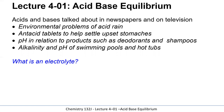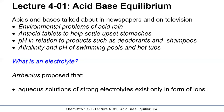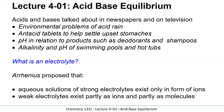So exactly what are acids and bases? To explain that, we're first going to talk about electrolytes. Electrolytes are substances that when dissolved in water will conduct electricity. Arrhenius suggested that strong electrolytes are substances that exist only in the form of ions — the molecules or ionic compounds will break apart and release ions into solution. Weak electrolytes only exist partly as ions and mostly as molecules.